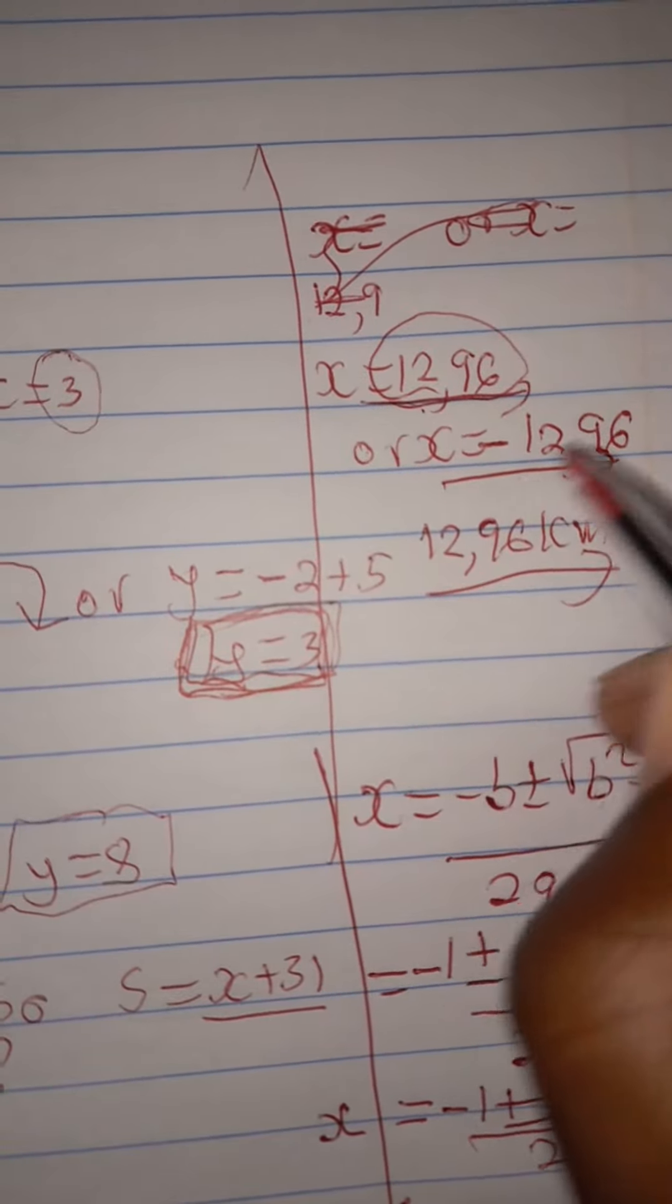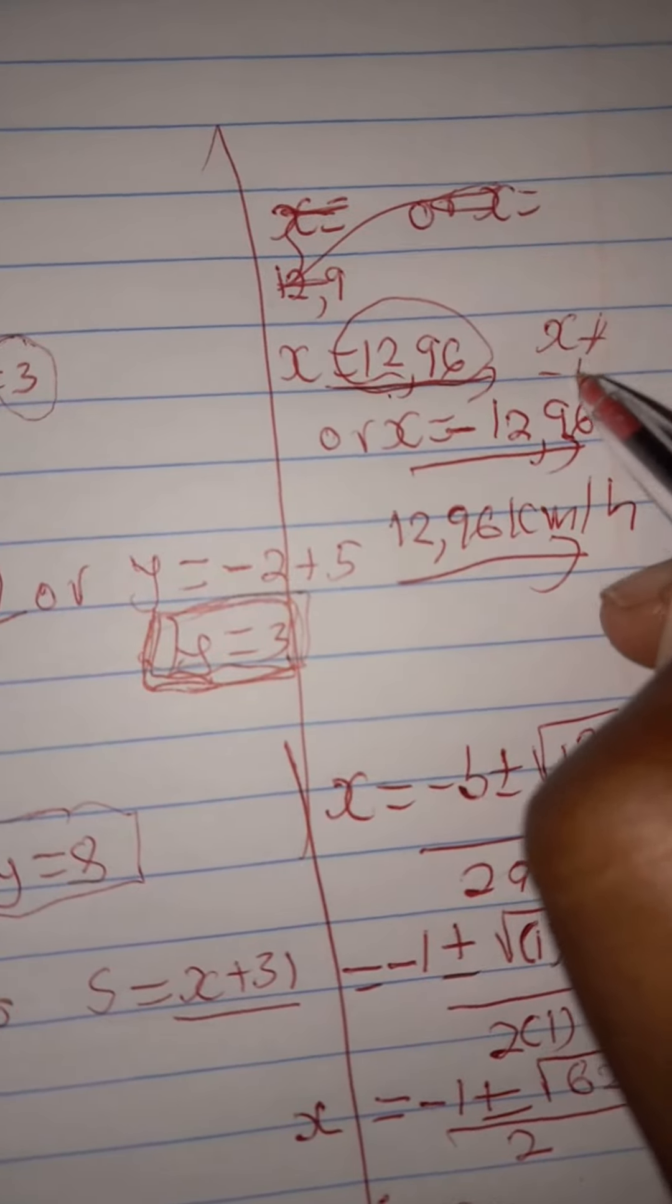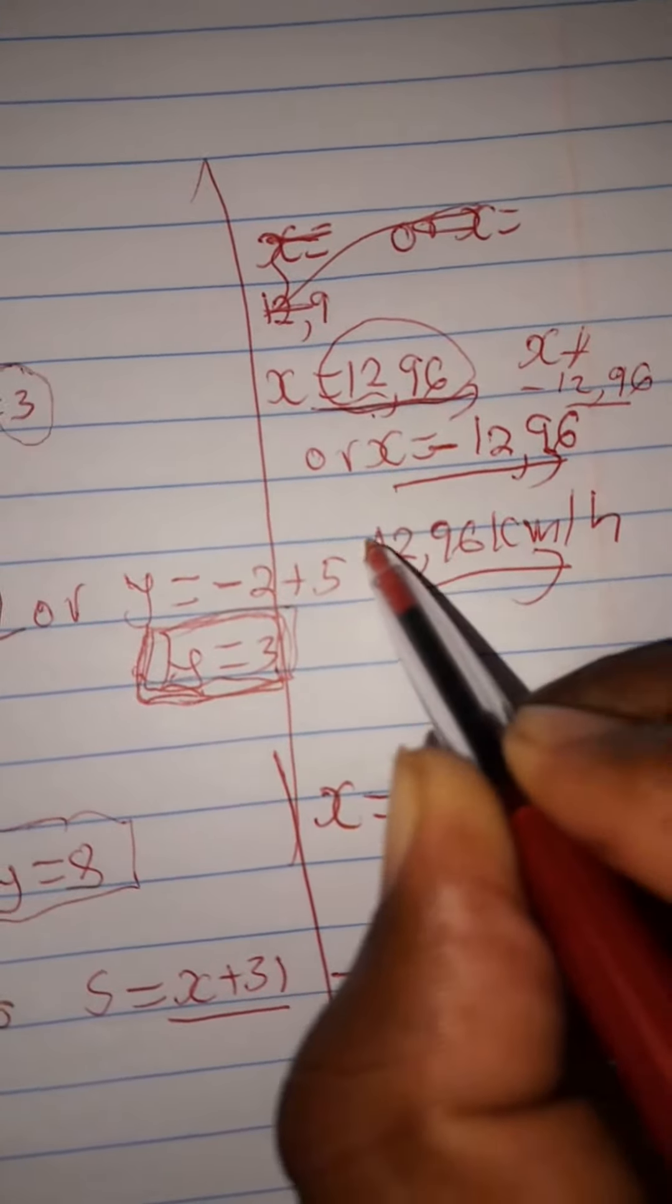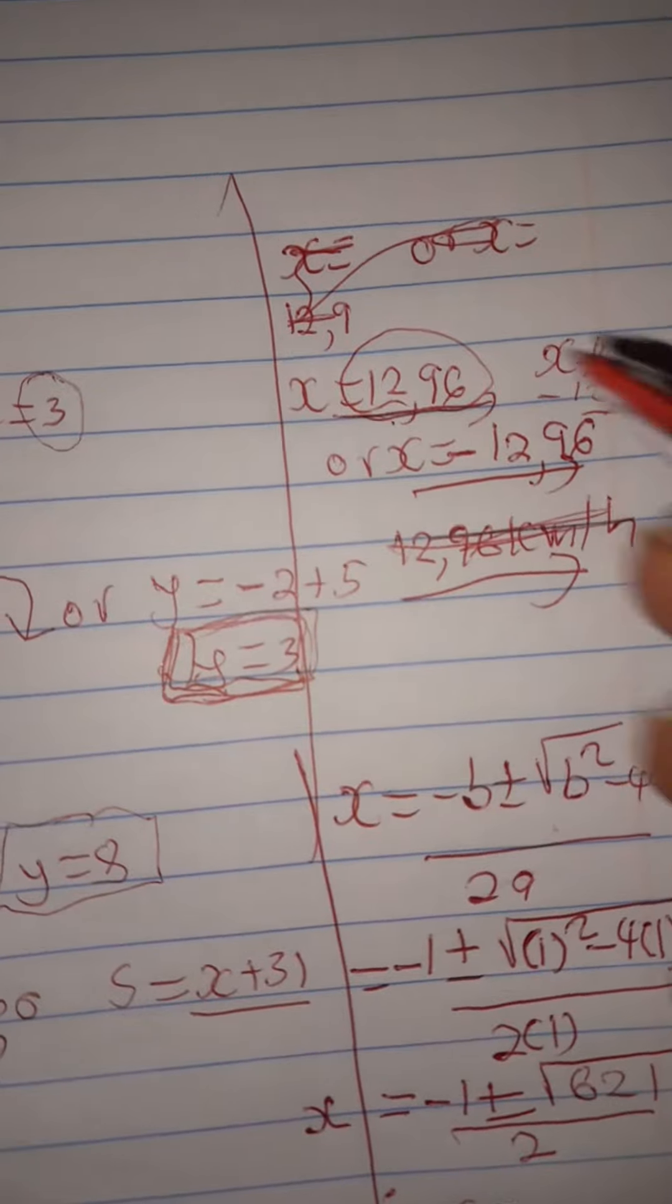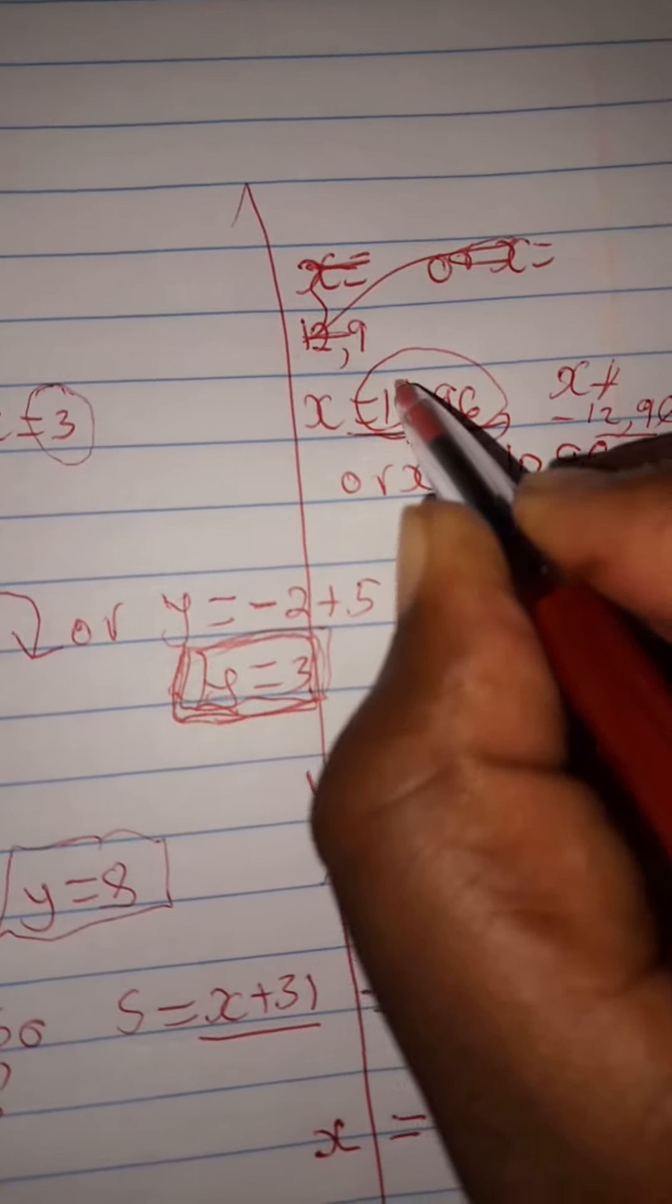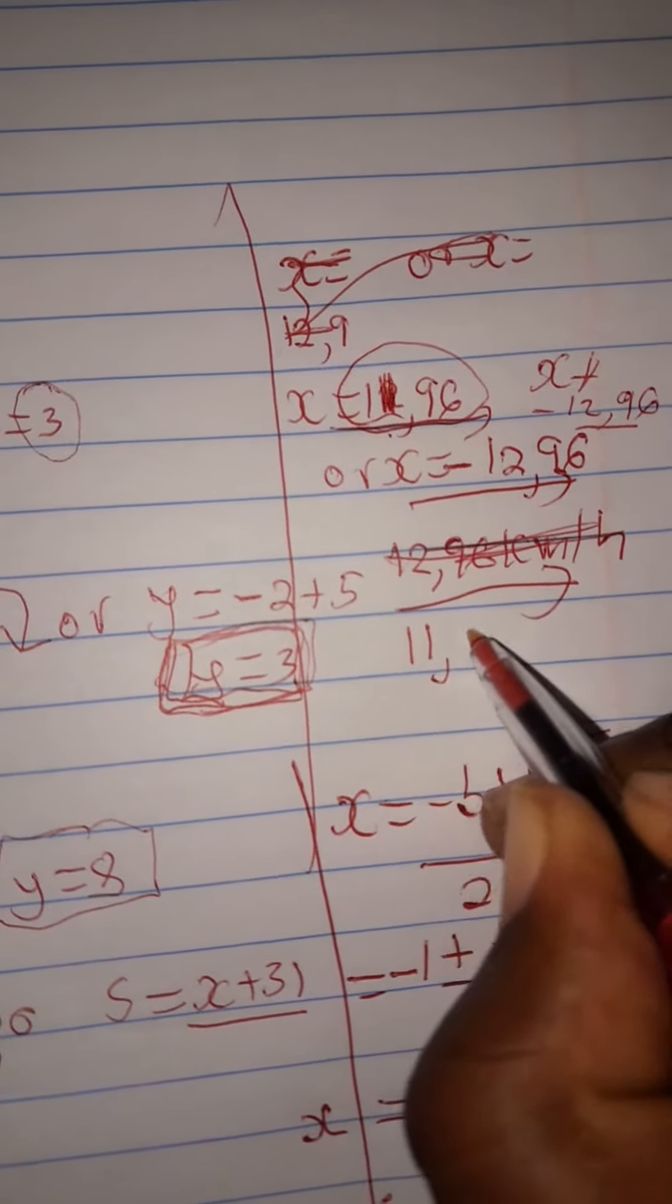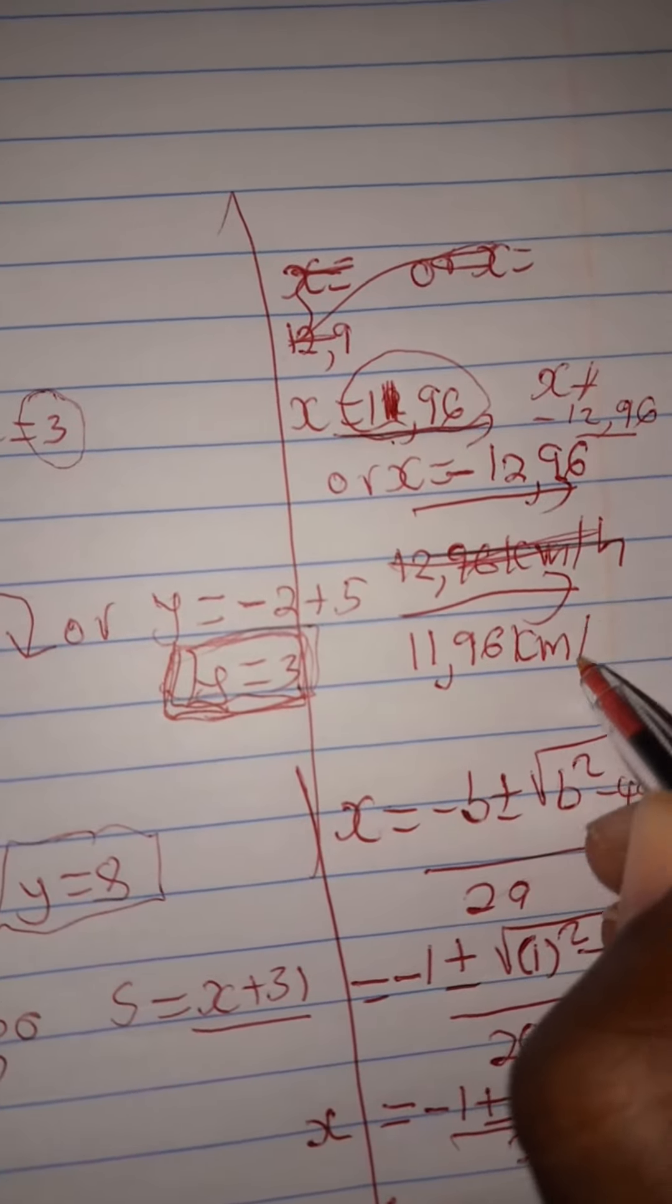The arrow wheel is correct, but we can see that speed cannot be negative at 12.96. What is happening here when you punch your calculator? I guess it was my error in terms of punching. So this should be 11.96. The speed should be 11.96 kilometers per hour.